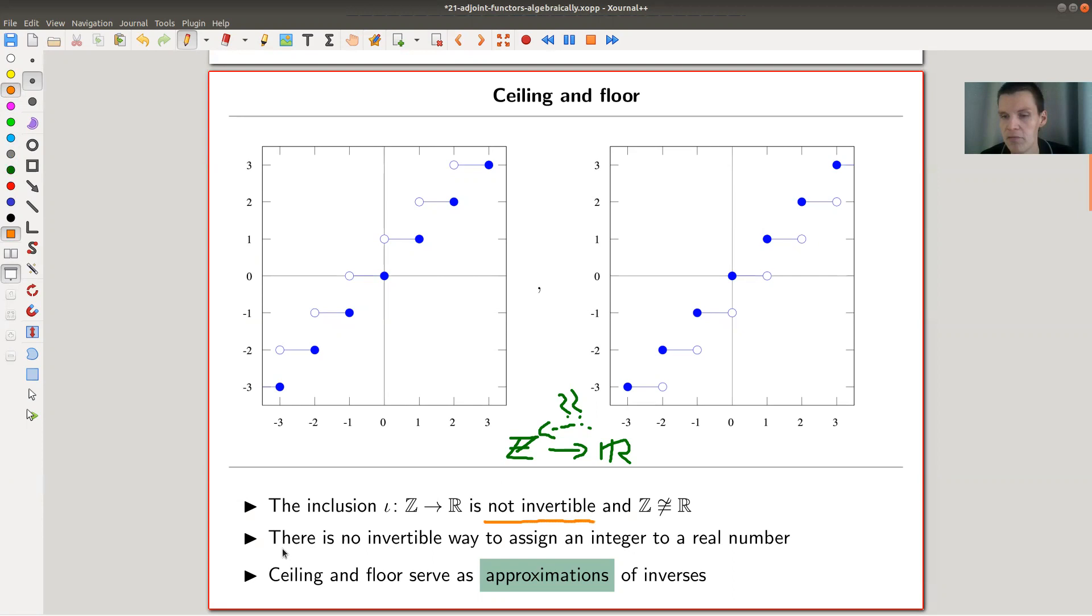So I said here, there's no invertible way to assign an integer to a real number in a strict invertible sense. In a non-strict sense, of course, you can set zero to zero. But what to do with all the other real numbers, a little bit of a question, and the ceiling and the floor function.